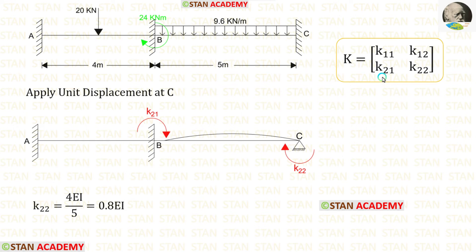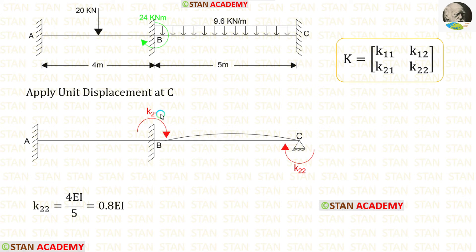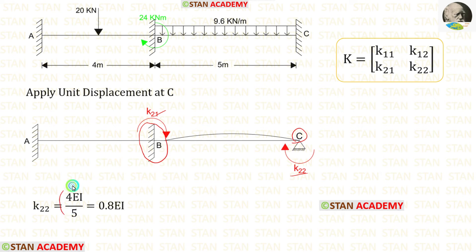Now let us find the second row of the stiffness matrix by applying unit displacement at the second coordinate, which is at point C. We have already calculated K21. For K22, from point C we look at the other end B, which now has a fixed support. Applying 4EI/L with L = 5, we get K22 equals 0.8EI.